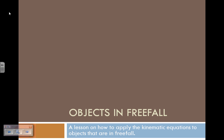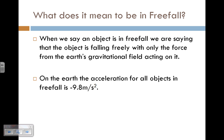It says objects in freefall, and we're going to apply the kinematic equations. We should begin by talking about what freefall is. When we say an object is in freefall, we mean that the object is falling freely where only Earth's gravitational field is acting on it. There are no external forces other than that.